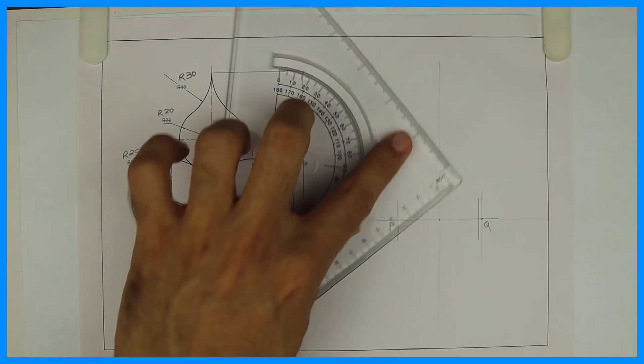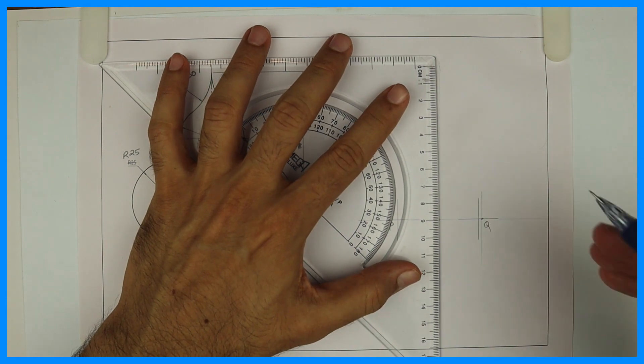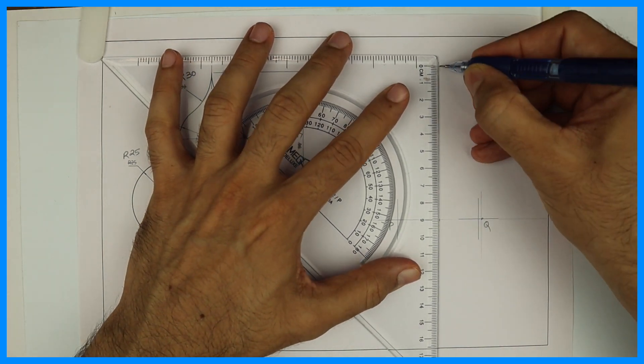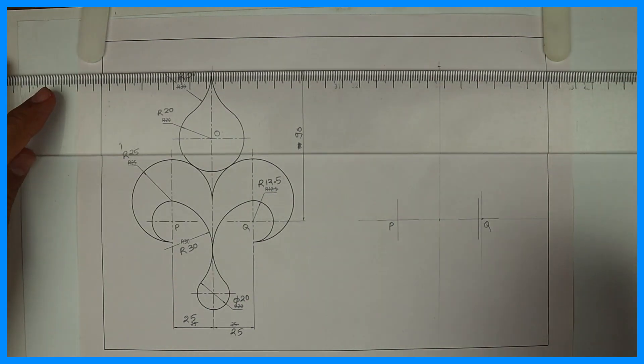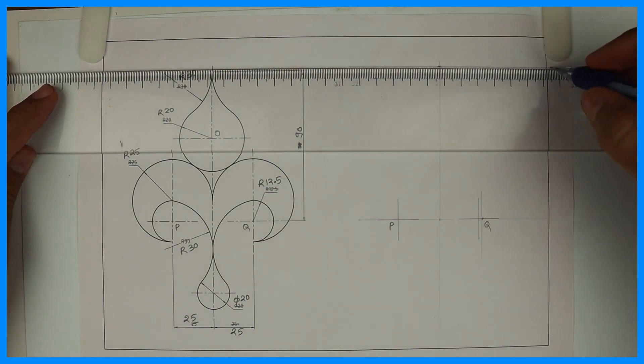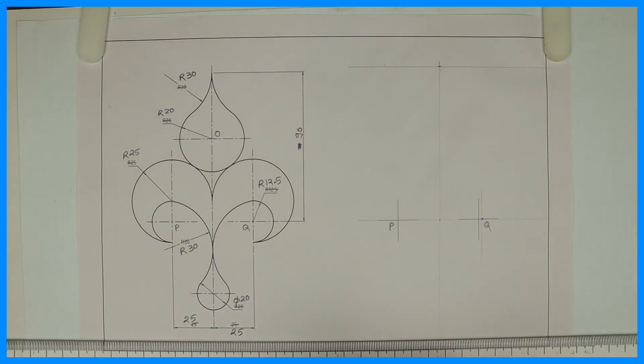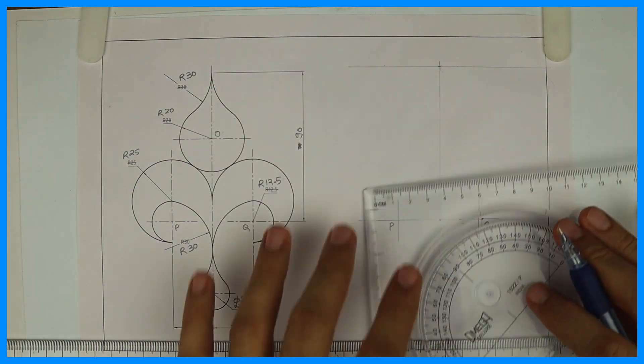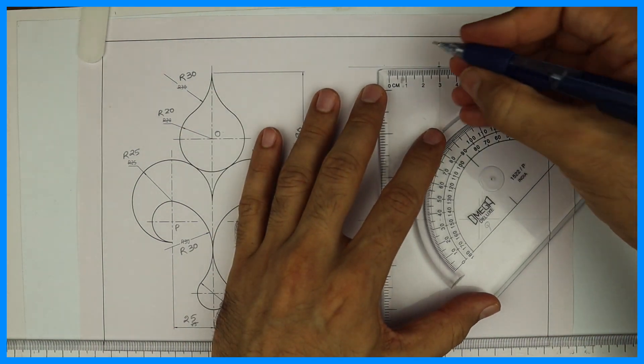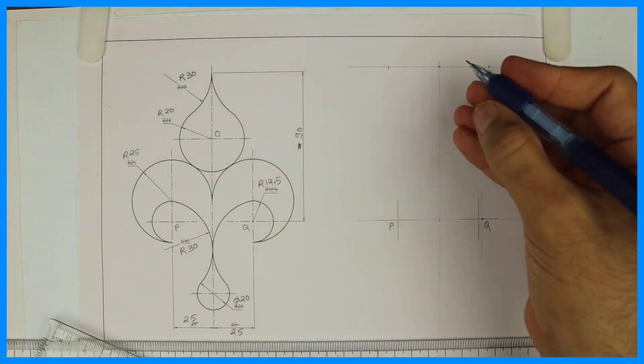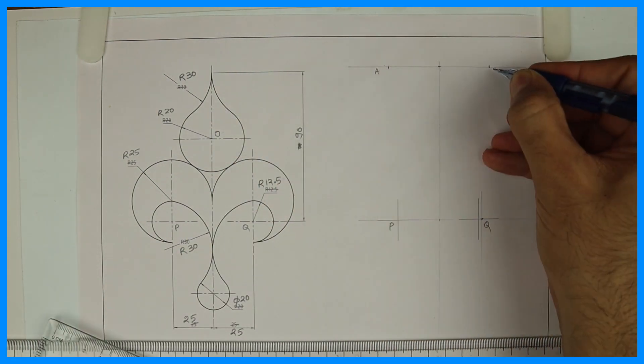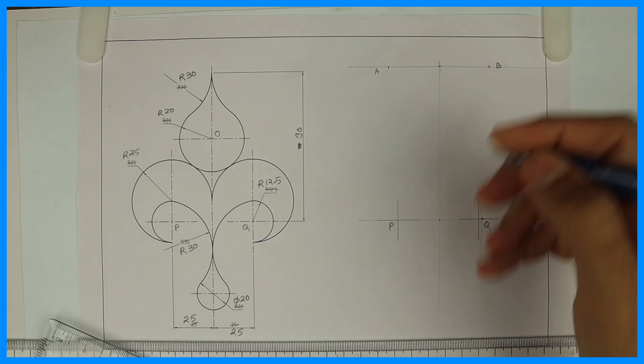From there I'll draw a horizontal line. Now if you see radius 30 they have given, so that means from this point, the center would be 30. So take 30 on both the sides. Let's say those points are A and B.